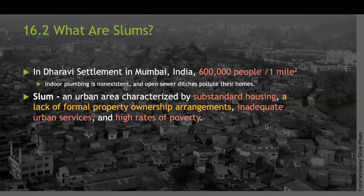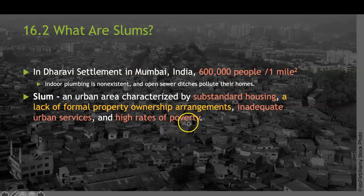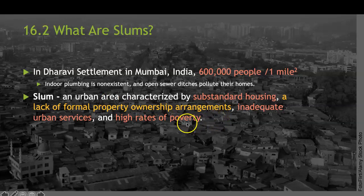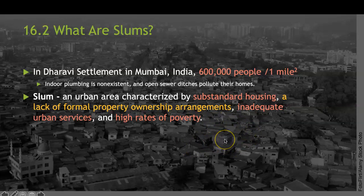Slums are an extreme case of urbanization. For example, in Mumbai, India, in one square mile there are more than 600,000 people living packed in such a small area. Of course, it's not healthy because land planning is poor and regulations are poor. The slum is characterized by substandard housing, a lack of formal property ownership arrangements, inadequate urban services, high risk of poverty, and very bad environmental pollution.